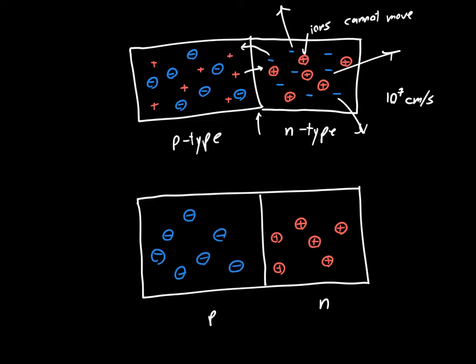But now some electrons have made it over to the p-side, and some holes have made it over to the n-side. There's still a bunch of holes on the p-side and electrons on the n-side, but there's less than there were before. Since there's fewer electrons and a lower concentration than initially, the n-side is going to have a net charge.